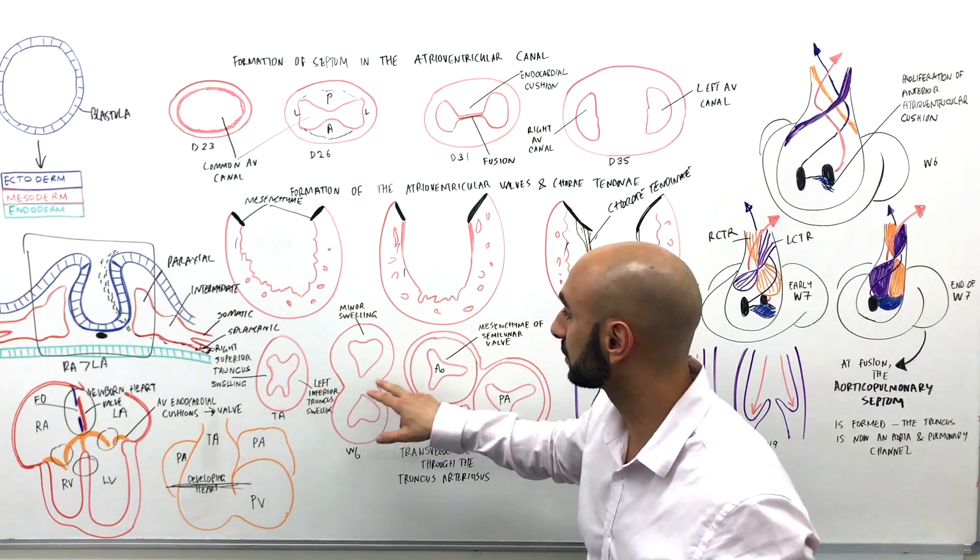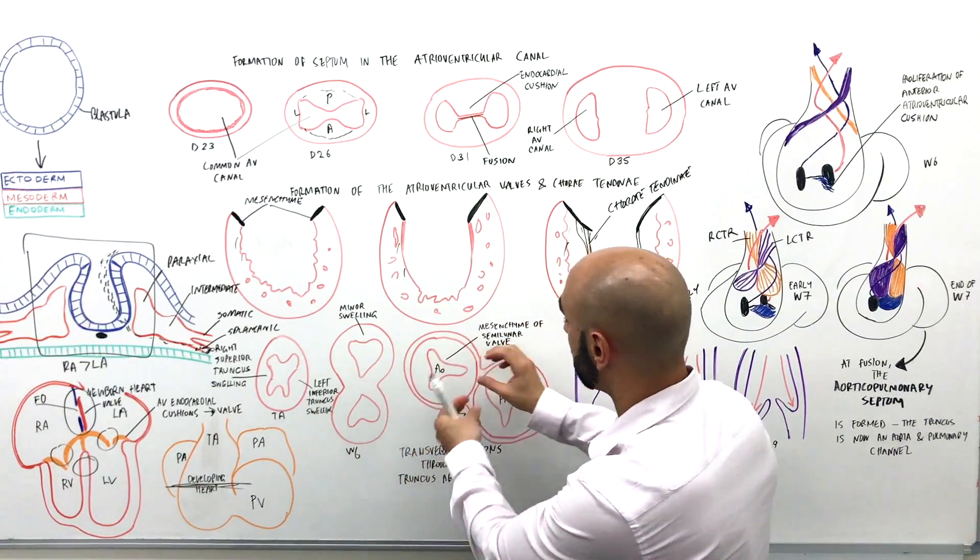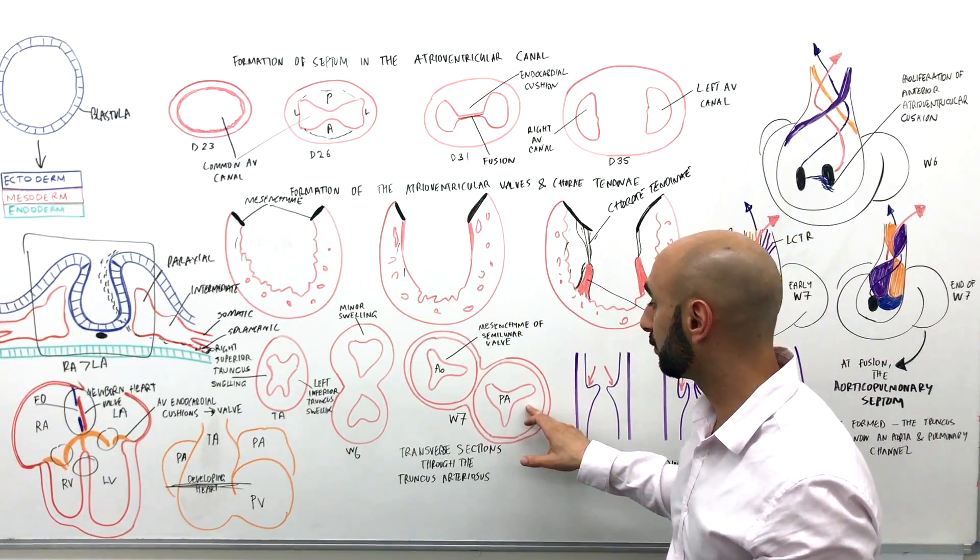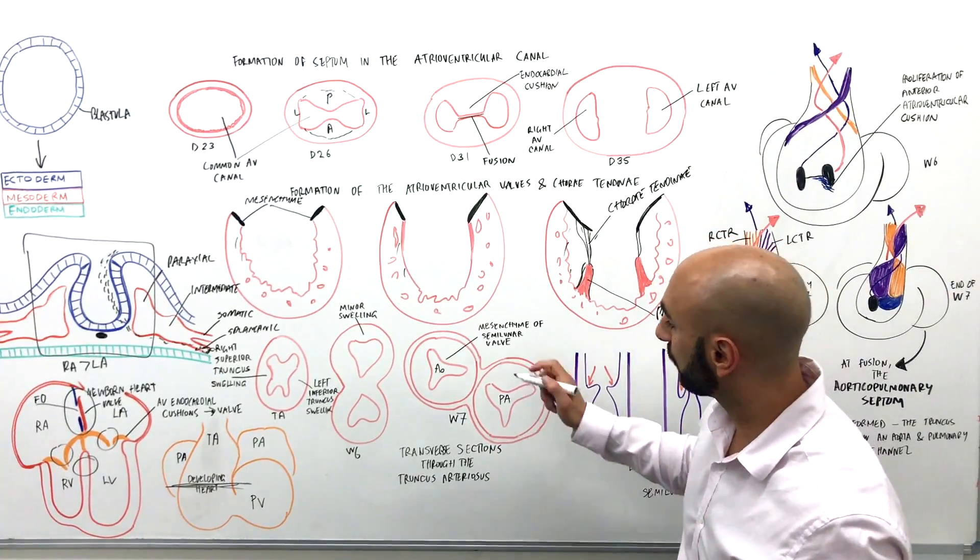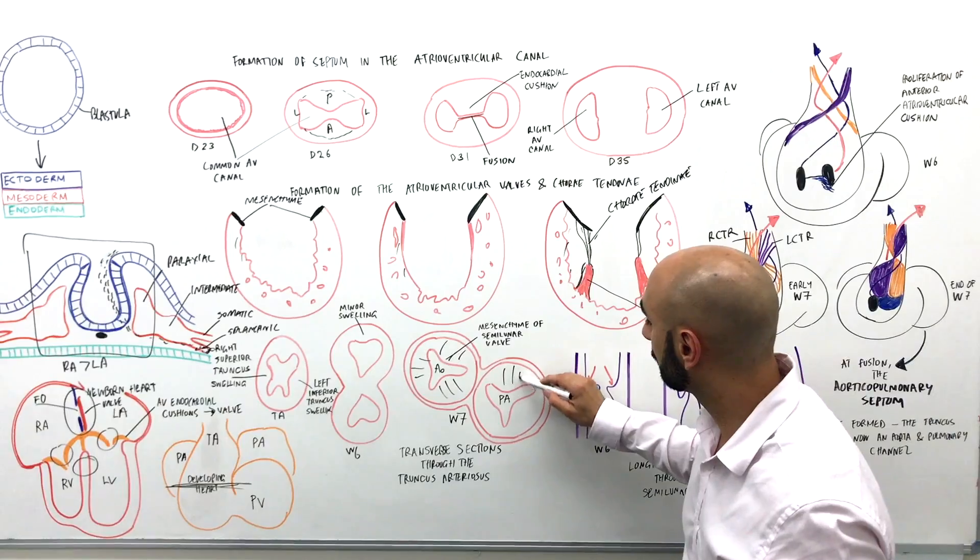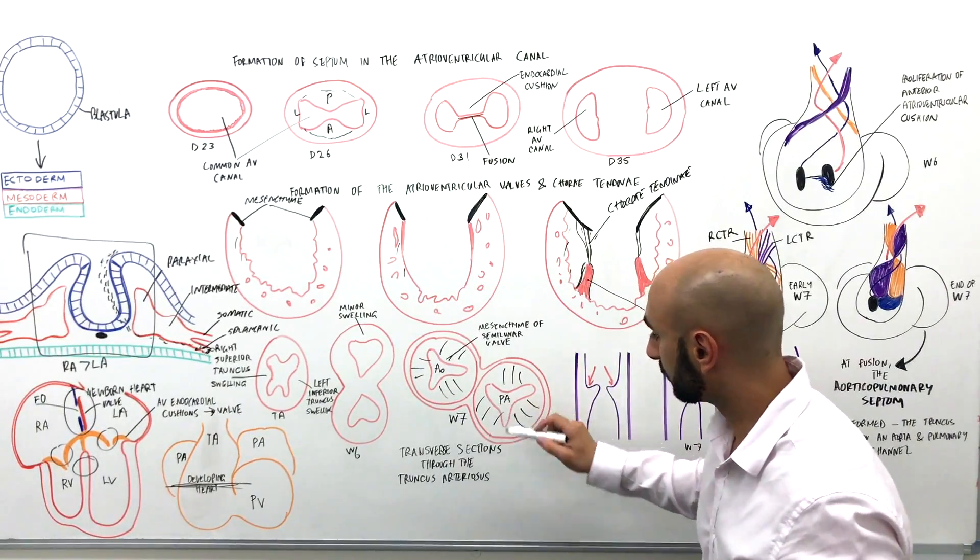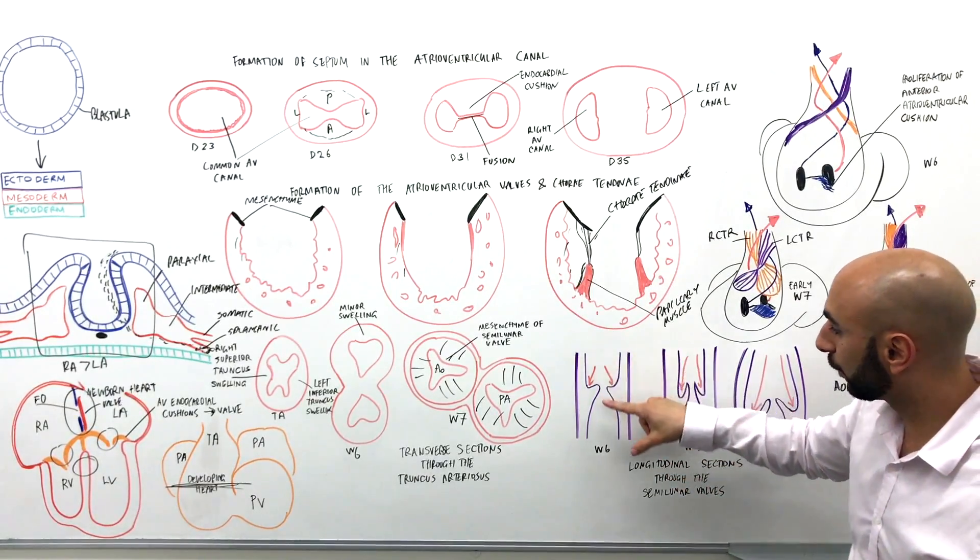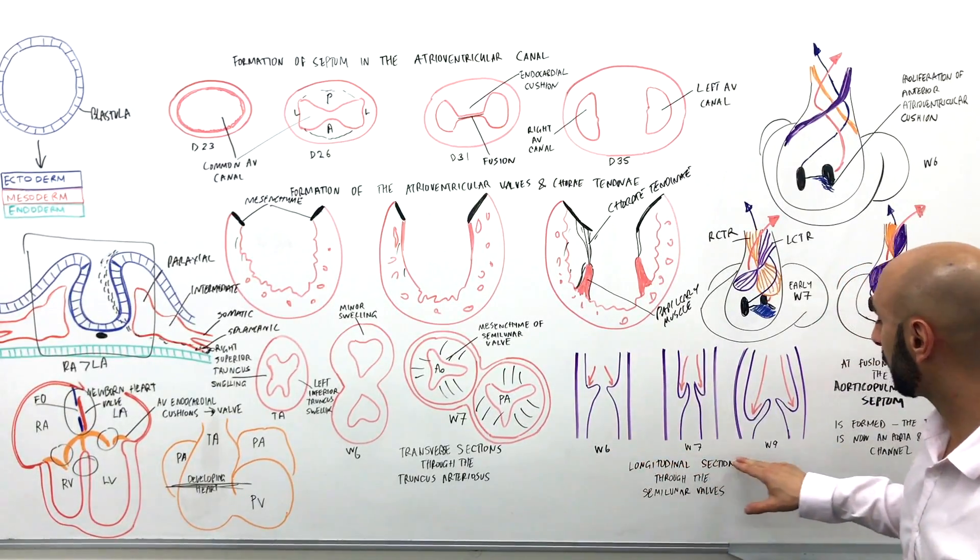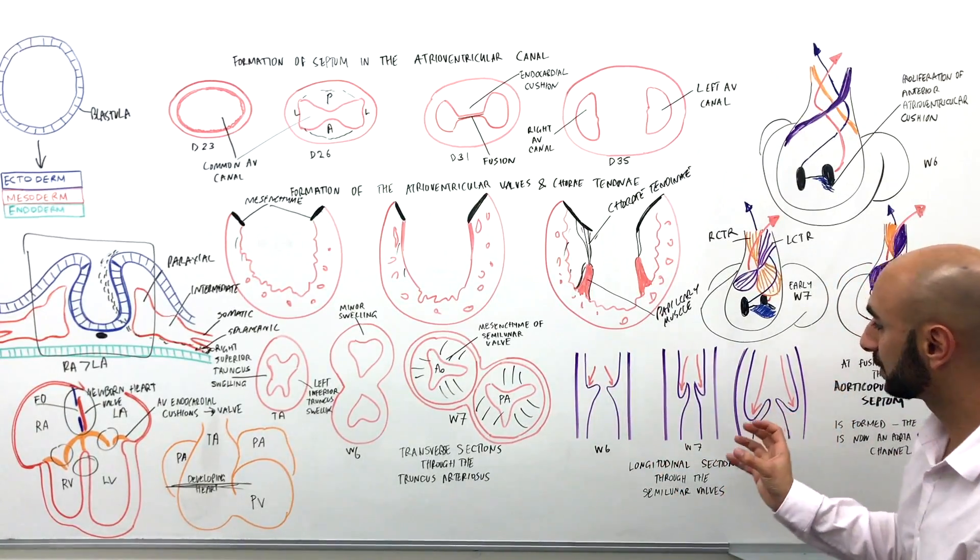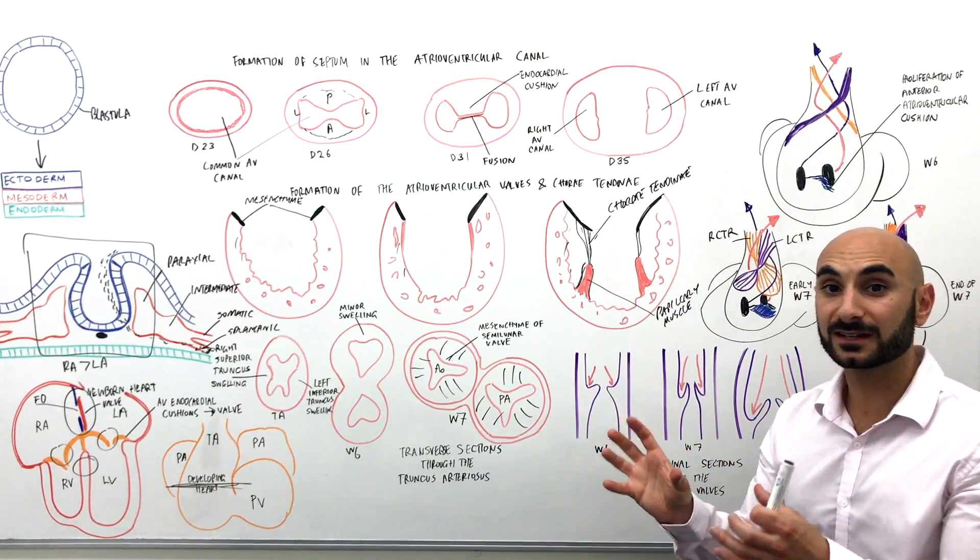So we have a cross-sectional view of the truncus arteriosus, and again we have the left inferior truncus swelling and the right truncus swelling joining, fusing, and then turning, separating the aorta and pulmonary artery. And now this here is tissue of the valve.